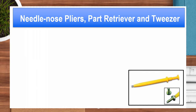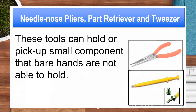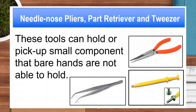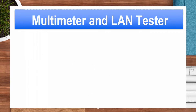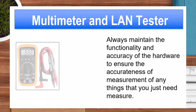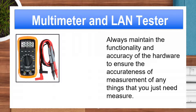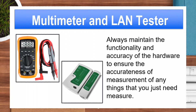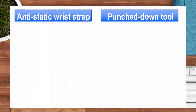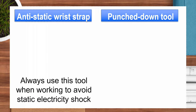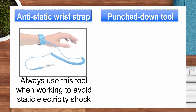Needle nose pliers, part retriever, and tweezer. These tools can hold or pick up small components that bare hands are not able to hold. Multimeter and LAN tester. Always maintain the functionality and accuracy of these tools to ensure accurate measurements. Anti-static wrist strap. Always use this tool when working to avoid static electricity shock.